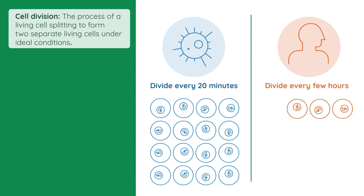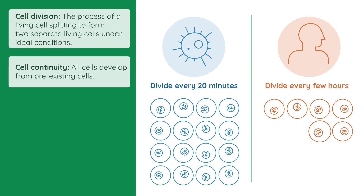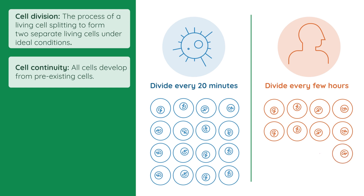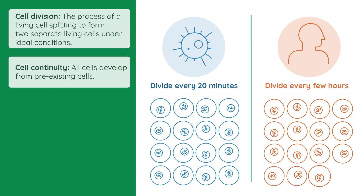Cell division gives rise to one of the characteristics of life, which is cell continuity. So before we start, we'll take a look at the definition of cell continuity. This means that all cells develop from pre-existing cells. So existing cells divide and become new cells. Cell continuity is vital in all species to allow for growth and for life to continue.